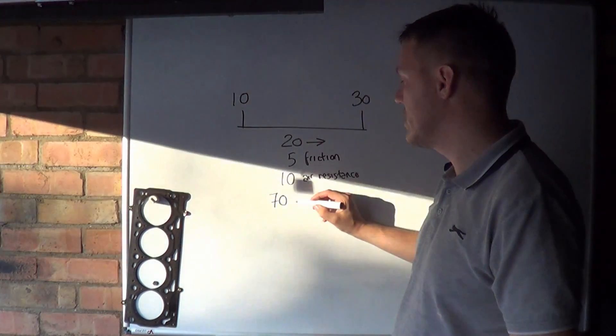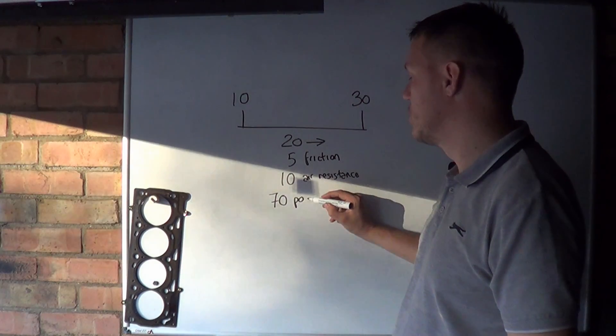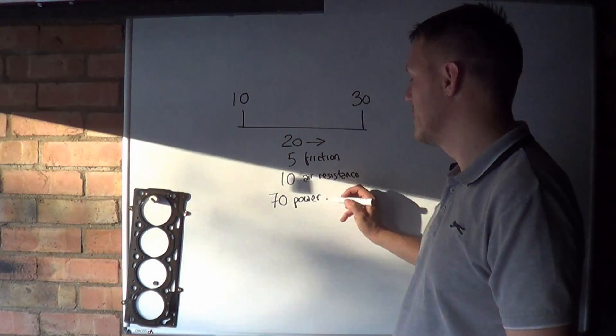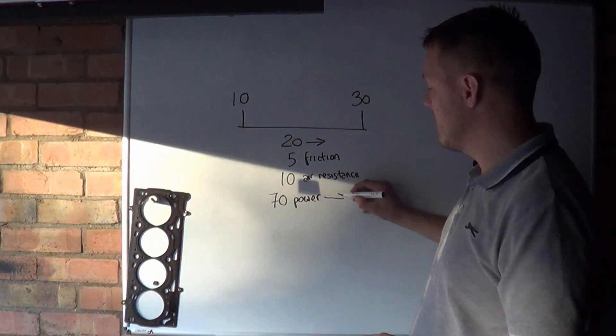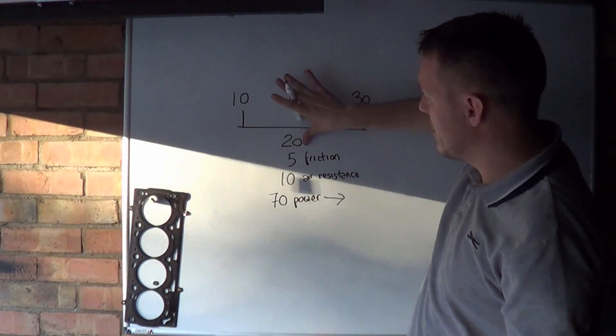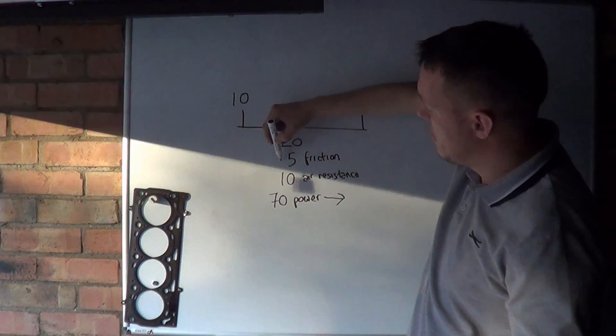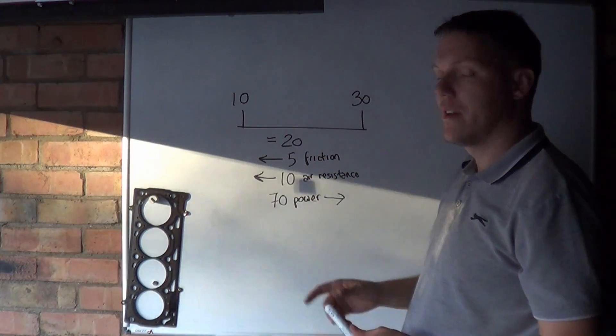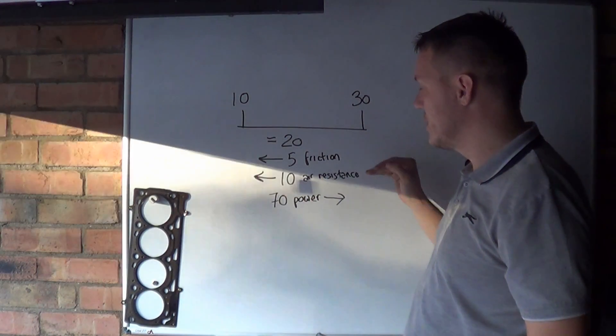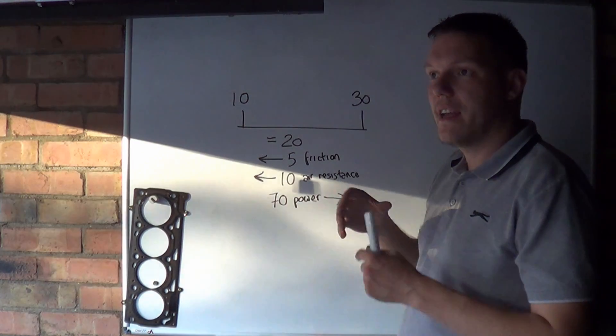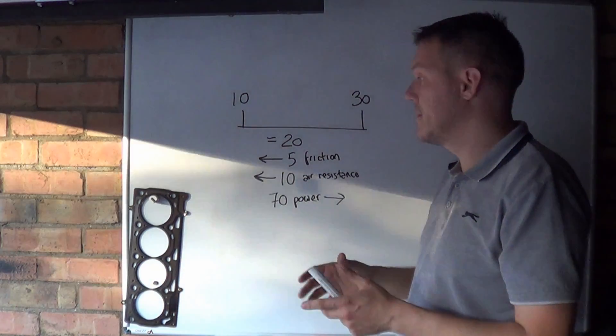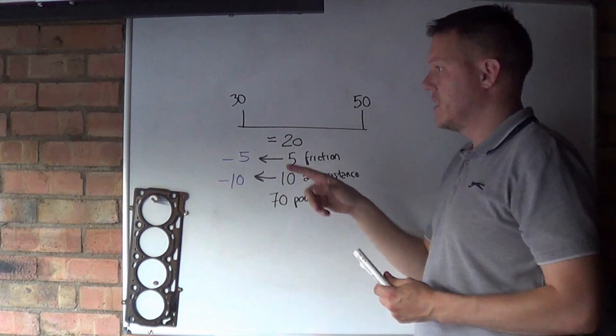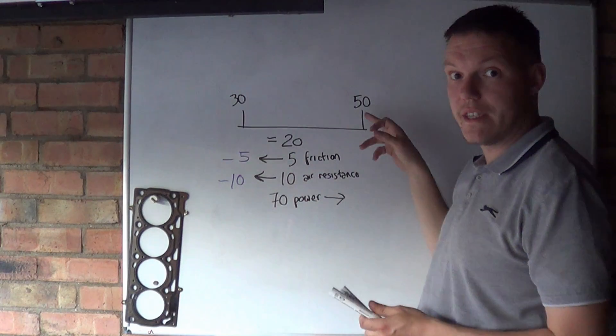We're going to say our engine has 70 units of power, of stuff, of push. So we've got 70 going this way, that's what we get, that's our equals. But we've got 5 pushing back and we've got 10 pushing back.